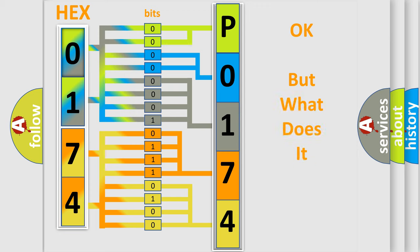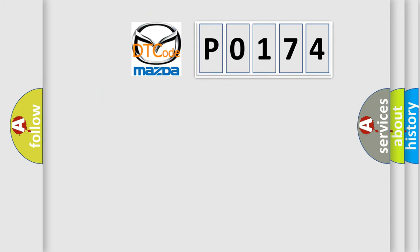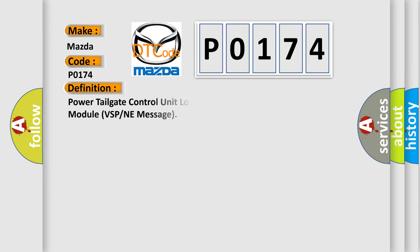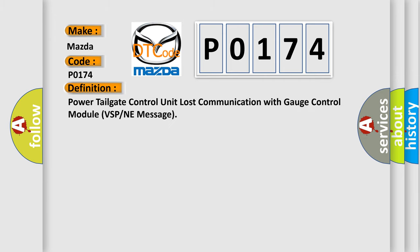The number itself does not make sense to us if we cannot assign information about what it actually expresses. So, what does the diagnostic trouble code P0174 interpret specifically for Mazda car manufacturers? The basic definition is: Power tailgate control unit lost communication with gauge control module VSP or any message.